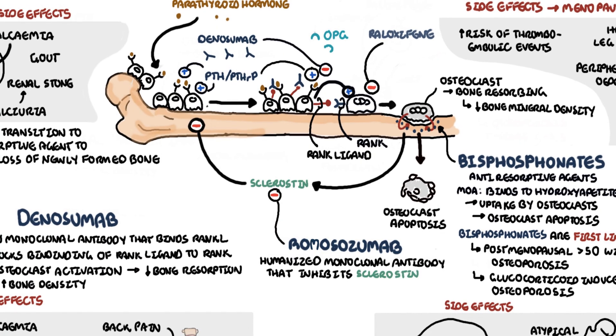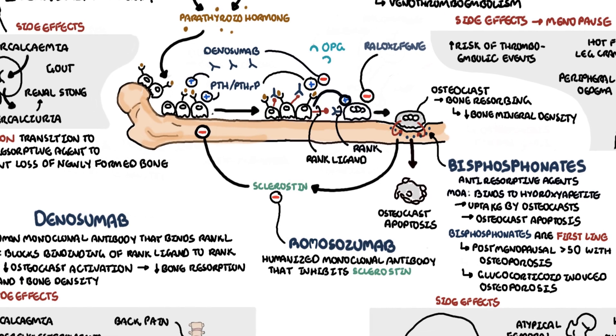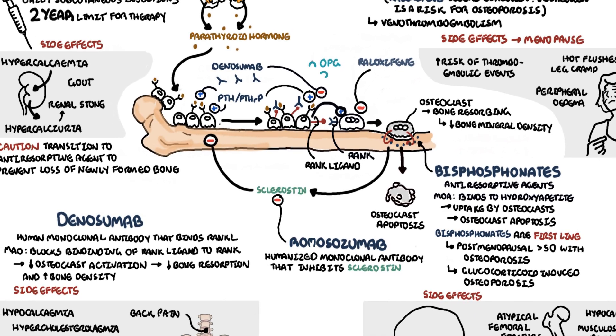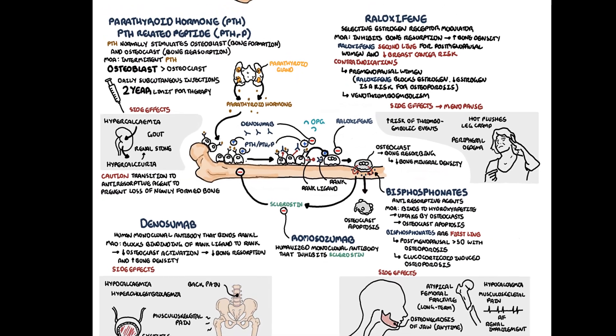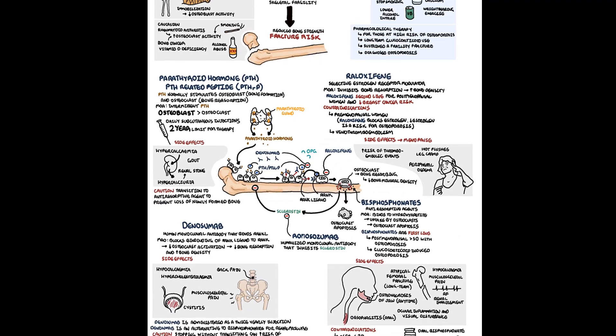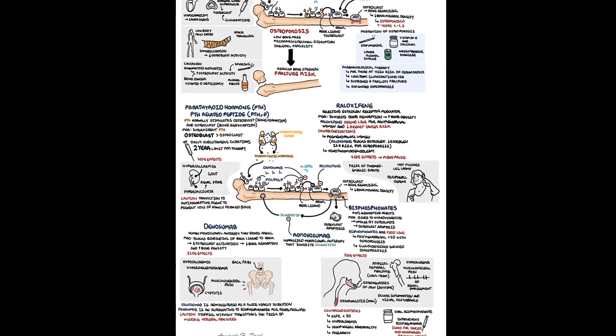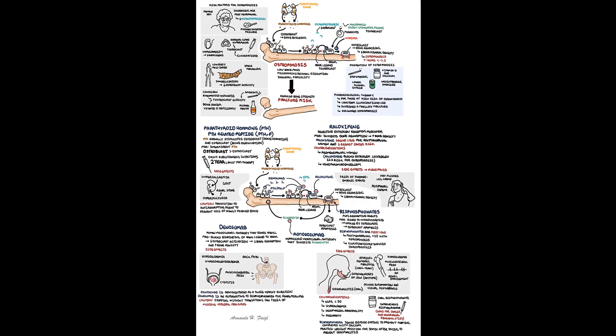In summary, osteoporosis is characterized by low bone mineral density with a T-score less than negative 2.5. It's important to address risk factors and encourage stopping smoking, stopping alcohol intake, and exercise, especially in the pre-menopausal state. The drug classes used for osteoporosis include bisphosphonates, RANK ligand inhibitors, parathyroid hormone analogues, and sclerostin inhibitors.